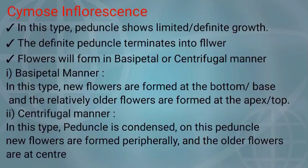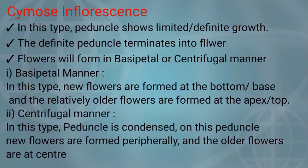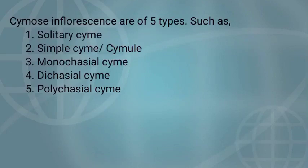Cymose inflorescence: in this type, the peduncle shows limited or definite growth. This definite peduncle terminates into a flower. In cymose inflorescence, flowers will form in basipetal or centrifugal manner. In basipetal manner, new flowers are formed at the bottom or base and the relatively older flowers are formed at the apex or terminal region. In centrifugal manner, the peduncle is condensed and new flowers are formed peripherally while older flowers are formed at the central region. Cymose inflorescences are of five types.